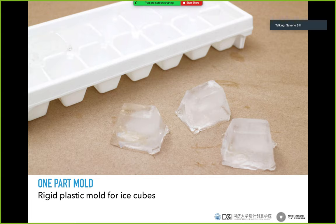Another kind of one-part mold is a rigid plastic ice cube tray. In this case the mold is very hard, not flexible, and the material — water turning to ice — is also hard. You have two hard materials, one inside the other. The way you release your copy is by waiting until the surface melts a little. Also the shape of the mold is always sloped so the ice cube can slide out.